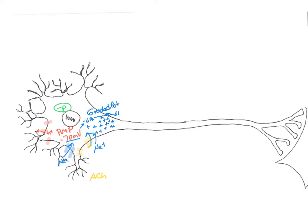However, if enough sodium enters the cell and enough positive charges funnel into the axon hillock and down to the initial segment of the axon, reaching negative 60 millivolts — which is threshold — that opens another gated channel found on the axon. These are voltage-gated channels, and at negative 60 millivolts this triggers the voltage-gated sodium channels to open. There are many sodium channels on the axon, and when they open, sodium floods in and the axon quickly depolarizes from negative 60 up to positive 30 millivolts.